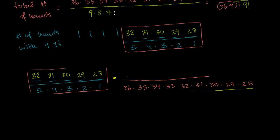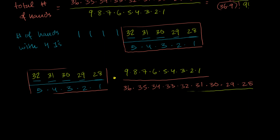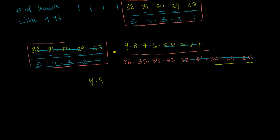This would be 9 factorial: 9 times 8 times 7 times 6 times 5 times 4 times 3 times 2 times 1. And then we have 5 times 4 times 3 times 1 in the denominator, so this will cancel out with that part. And then we have 32 times 31 times 30 times 29 times 28 — that is going to cancel with that. So what we're left with is just 9 times 8 times 7 times 6 over 36 times 35 times 34 times 33.